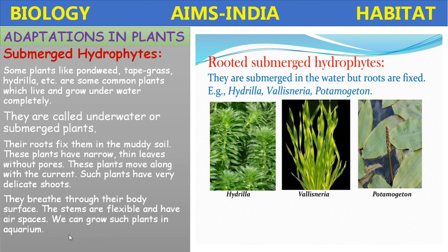Submerged plants breathe through their body surface. Their stems are flexible and have air spaces. We can grow such plants in an aquarium — particularly hydrilla and Vallisneria. These rooted submerged hydrophytes are water plants whose roots are fixed and bodies are completely inside water, unlike the fixed hydrophytes.